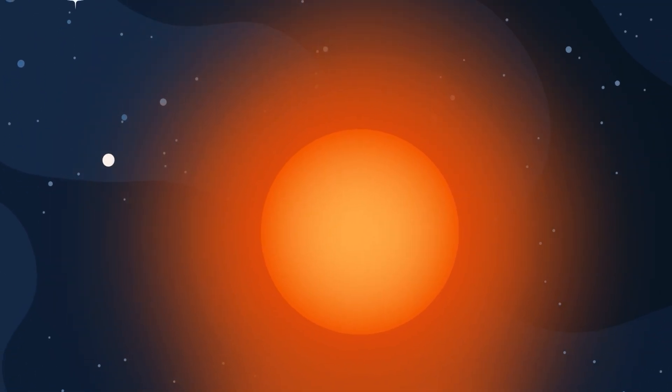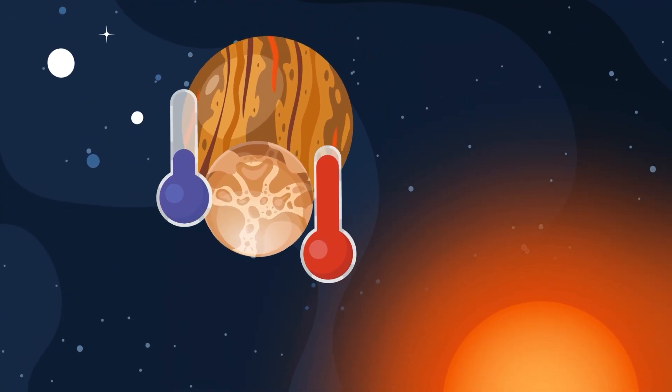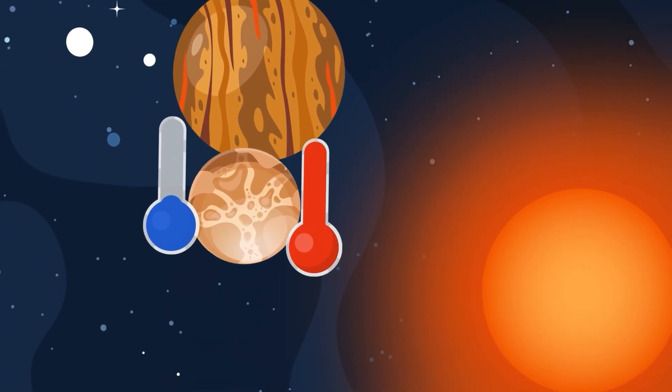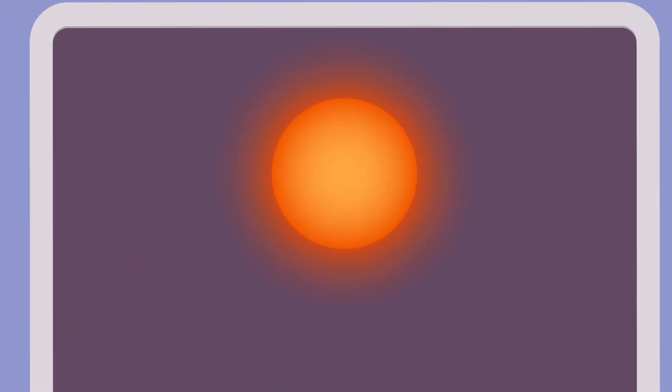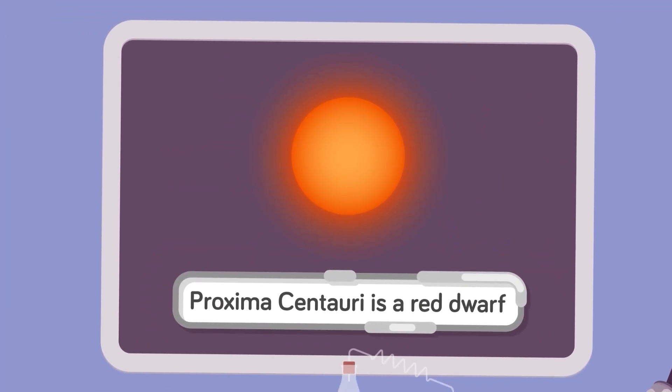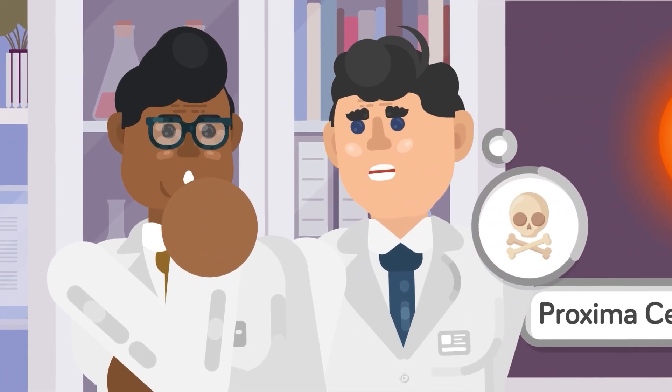Proxima B is tidally locked to the red dwarf it orbits, meaning one side of it faces toward the star at all times. That makes half of Proxima B extremely hot, while the other half is left cold. While that might not sound so bad, the fact that Proxima Centauri is a red dwarf means it poses a danger to anyone even remotely close to Proxima B.